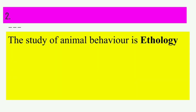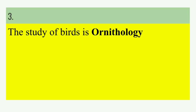Next we have ethology. The study of animal behavior is known as ethology. As we all know that human being is also a social animal. So we can say the study of animal or human behavior, particularly with a focus on behavior under natural conditions, is known as ethology. So, study of animal behavior.